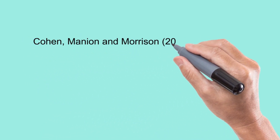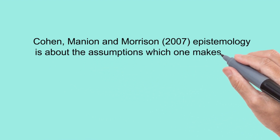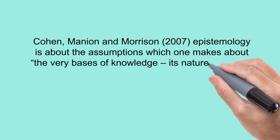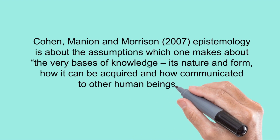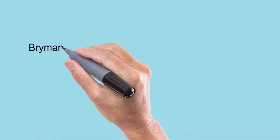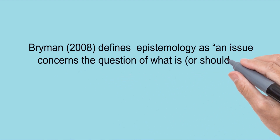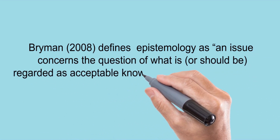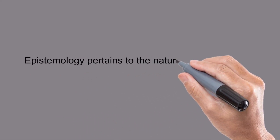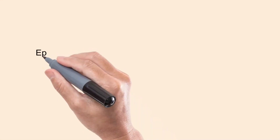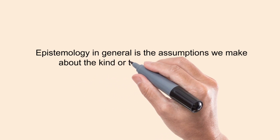Coven, Mannion and Morrison in 2007 state that epistemology is about the assumptions which one makes about the very basis of knowledge, its nature and form, and how it can be acquired and communicated to other human beings. Reiman in 2008 defines epistemology as concerned with what is or what should be regarded as acceptable knowledge in a discipline. Epistemology pertains to the nature of knowledge — Crotty 2003 — and in general refers to the assumptions we make about the kind or nature of knowledge.